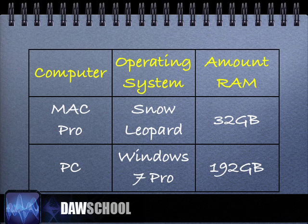For professional work, we're looking at the Mac Pro and the PC. The maximum RAM you can install on a Mac Pro is 32GB, and that's with either the 8-core or 12-core systems. On the PC, depending on the CPU, you can install up to 192GB of RAM, and even more if you can afford it. The current Mac operating system is now Snow Leopard. On the PC, it's Windows 7 Pro.